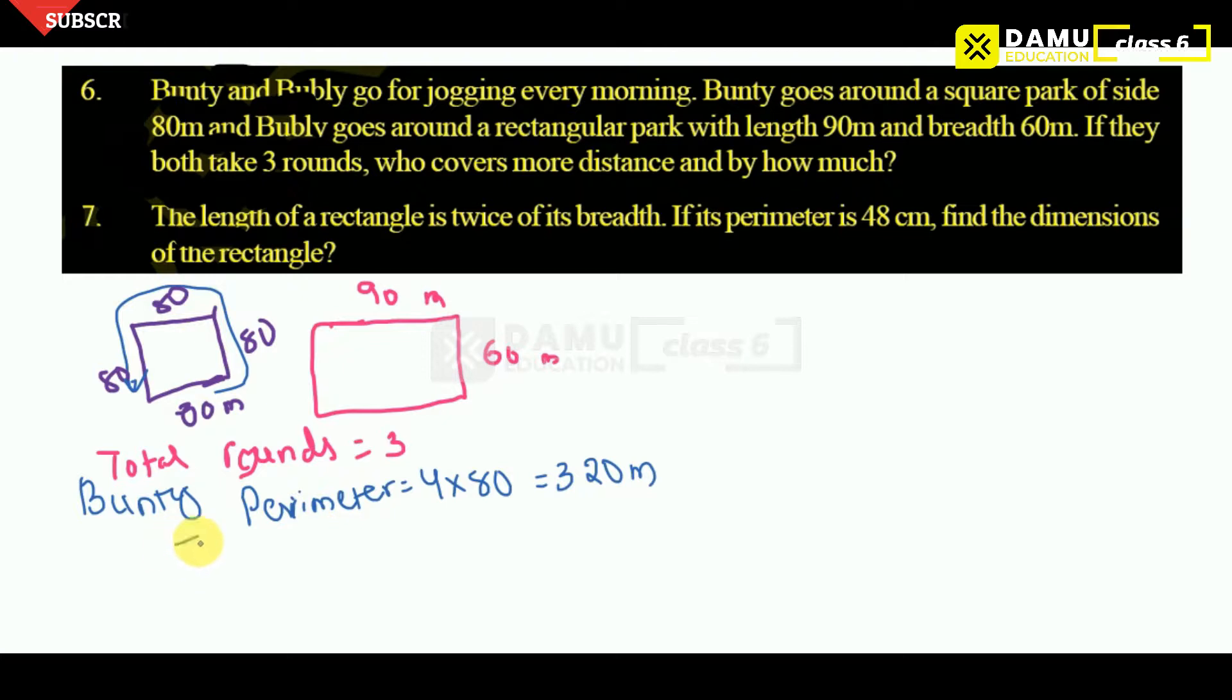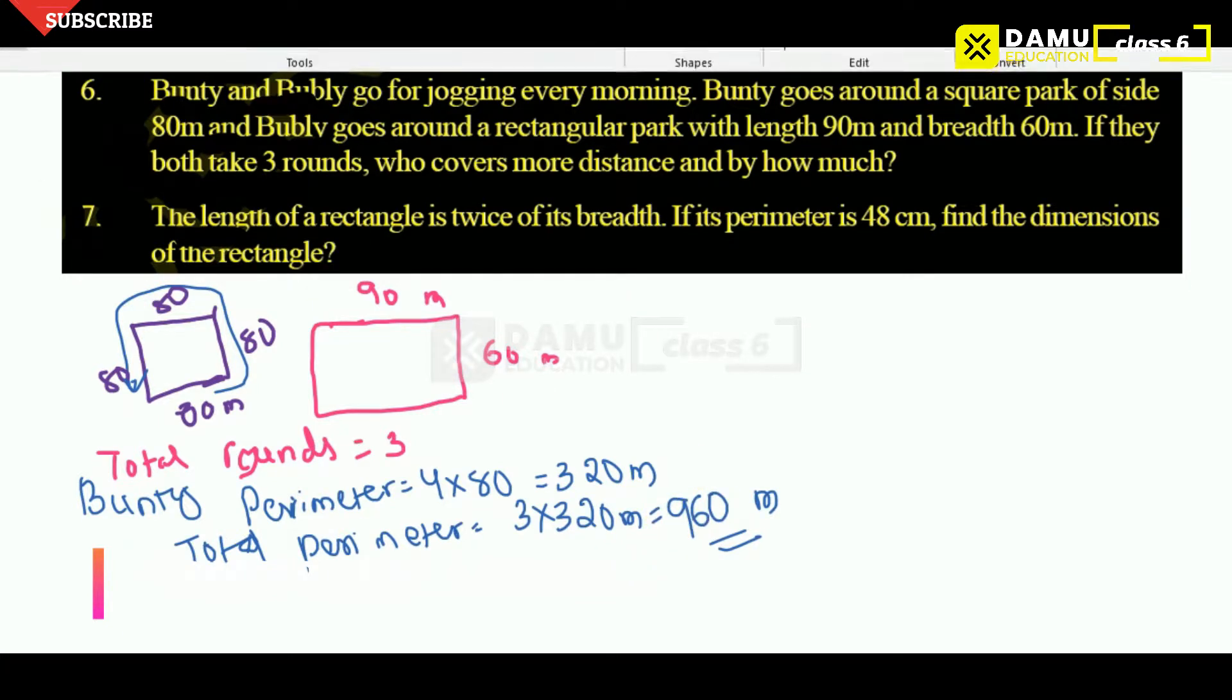320 meters. Like that, total perimeter. How many times he went? Total perimeter, 3 into each time 320 meter perimeter. 3 twos are 0, 3 twos are 6, 3 threes are 9. 960 meter covered by Bunty for each time while coming to jogging.